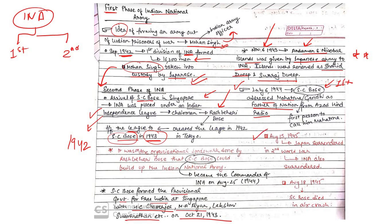In August 1945, Japan surrendered in the Second World War and the INA also surrendered. On August 18, 1945, Subhash Chandra Bose died mysteriously in an air crash.